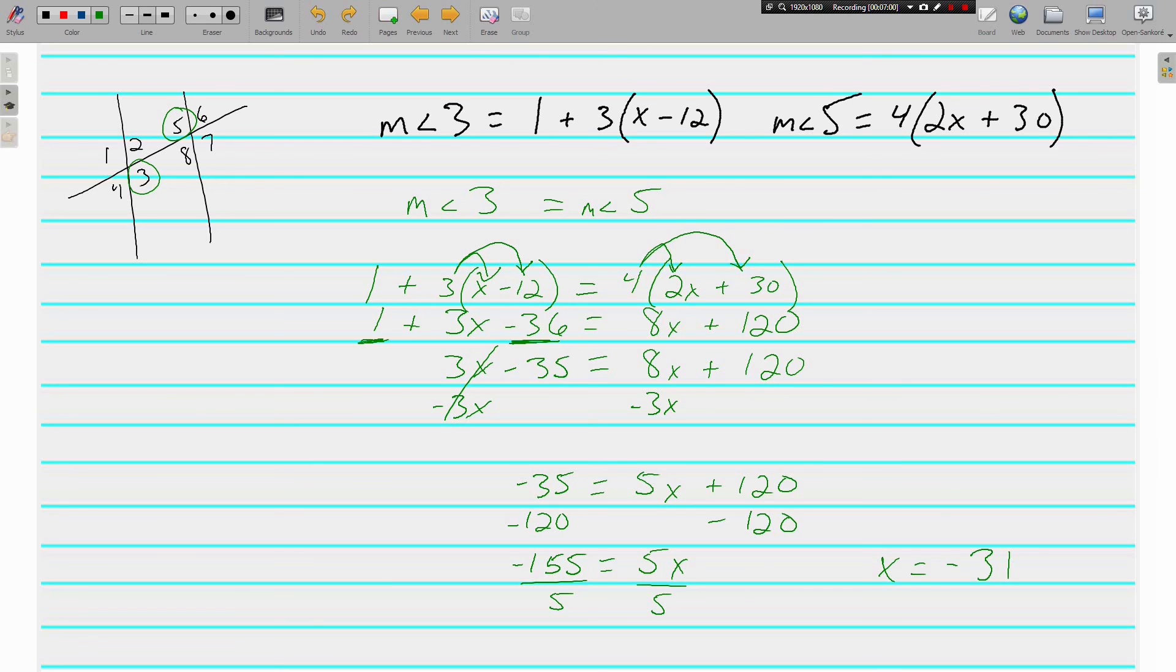So kind of a long, ugly equation. But it all comes from the relationship between the two angles. Angle 3 and angle 5 were alternate interior. And we know they're congruent. So it just means that they're equal to each other.